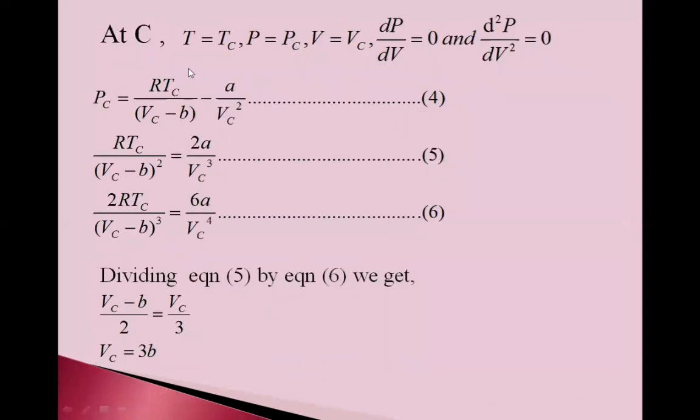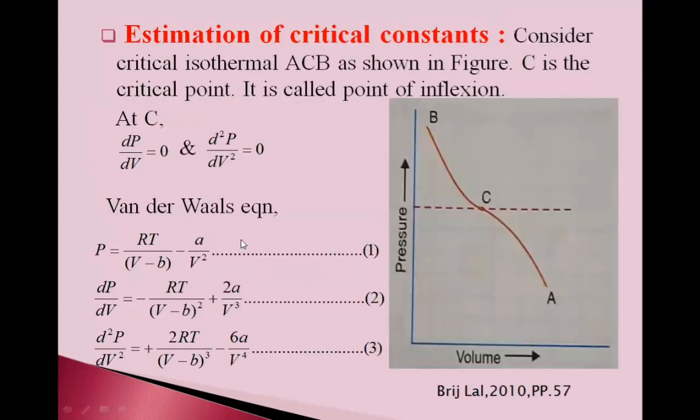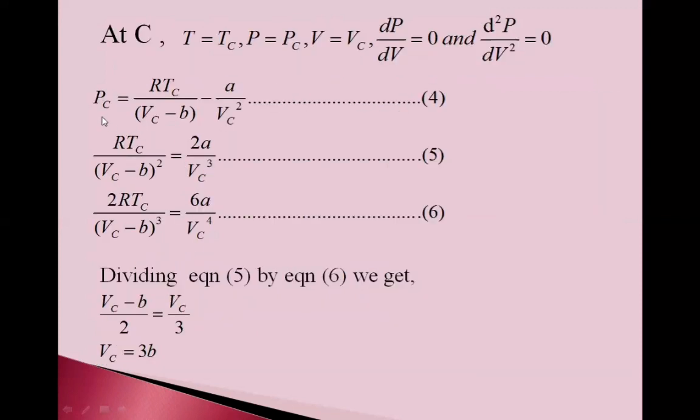So, at critical point C, T is equal to Tc, temperature. P is equal to Pc, pressure. V is equal to Vc, volume. Critical temperature, critical pressure, critical volume. And dP by dV is 0 and d²P by dV square is 0. So, for pressure, if we put these values in equation 1, it becomes Pc is equal to RTc upon Vc minus b minus a upon Vc square. Equation 4.